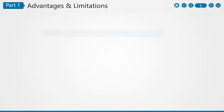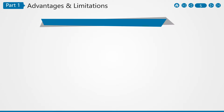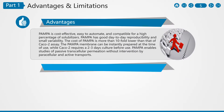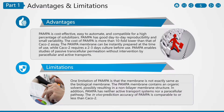PAMPA is cost-effective, easy to automate, and compatible with a high percentage of solubilizers. PAMPA has good day-to-day reproducibility and small variability. The cost of PAMPA is more than 10-fold lower than that of the CACO2 permeability assay. The PAMPA membrane can be instantly prepared at time of use, while CACO2 requires a 2–3 day culture before use.